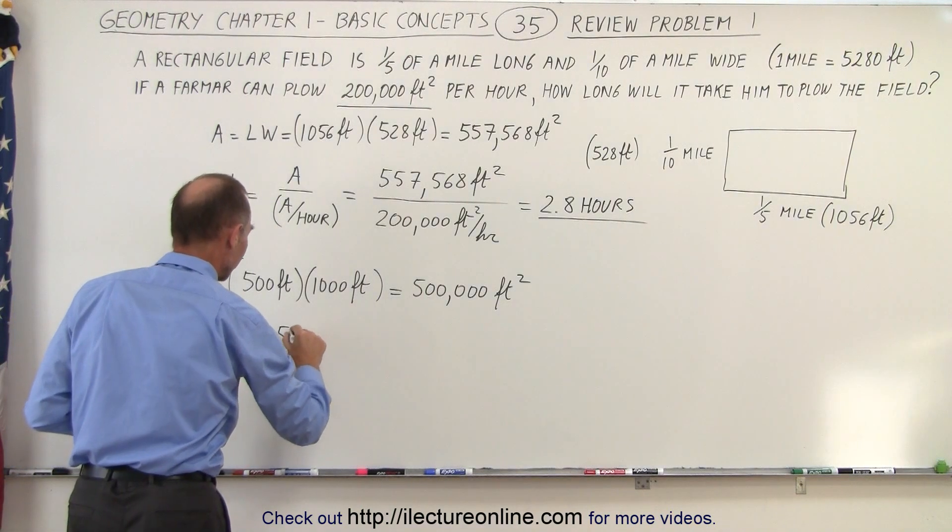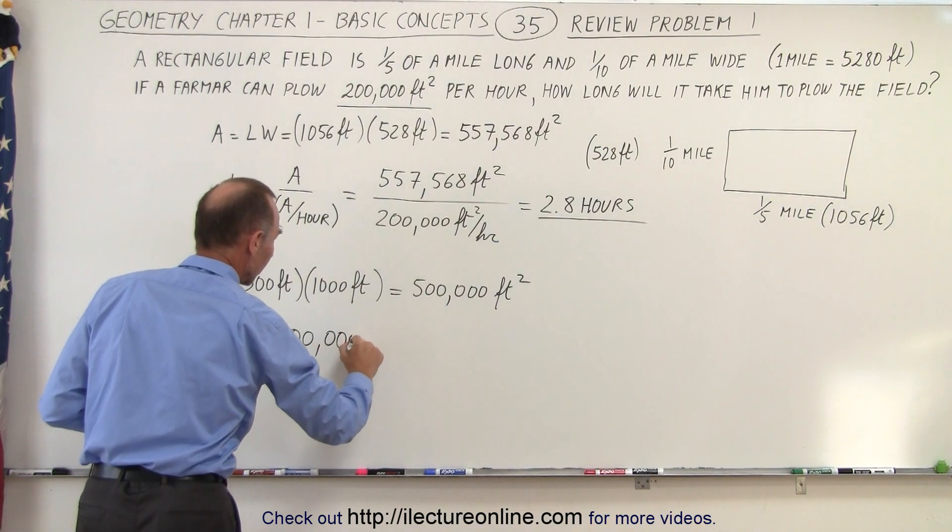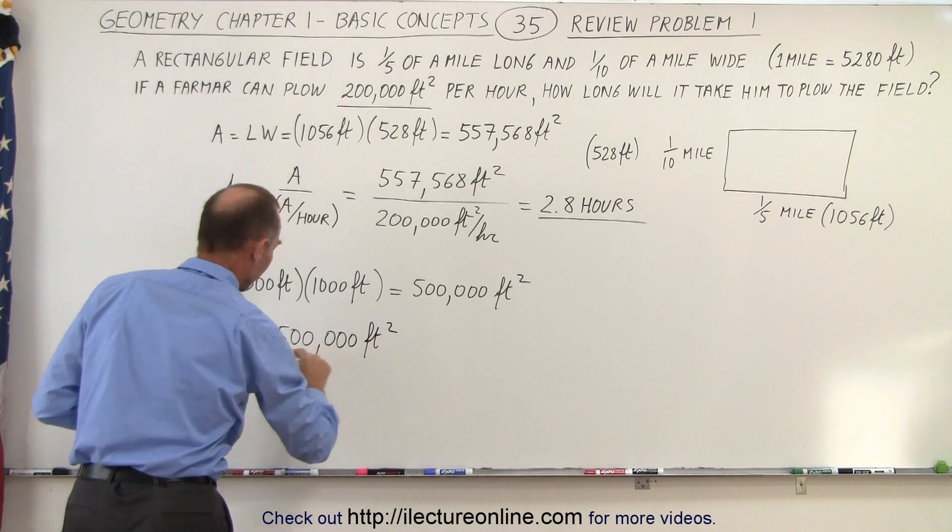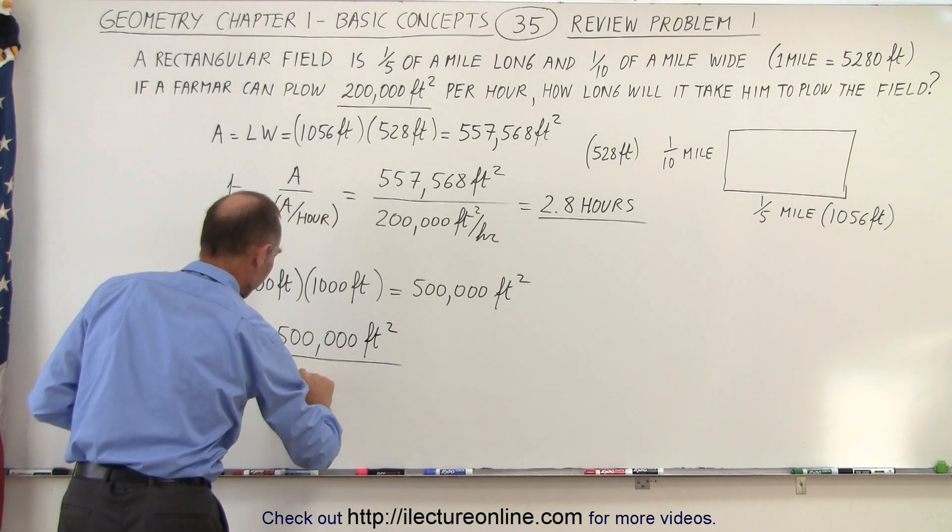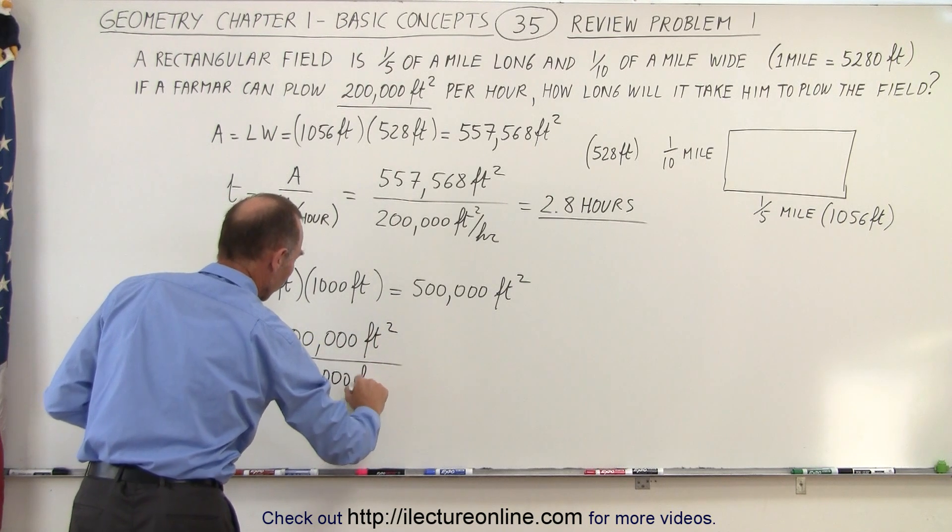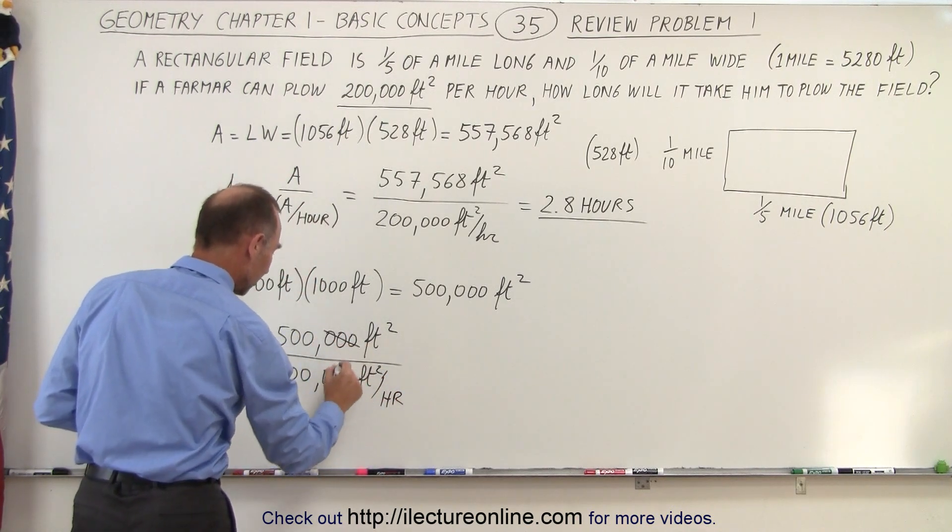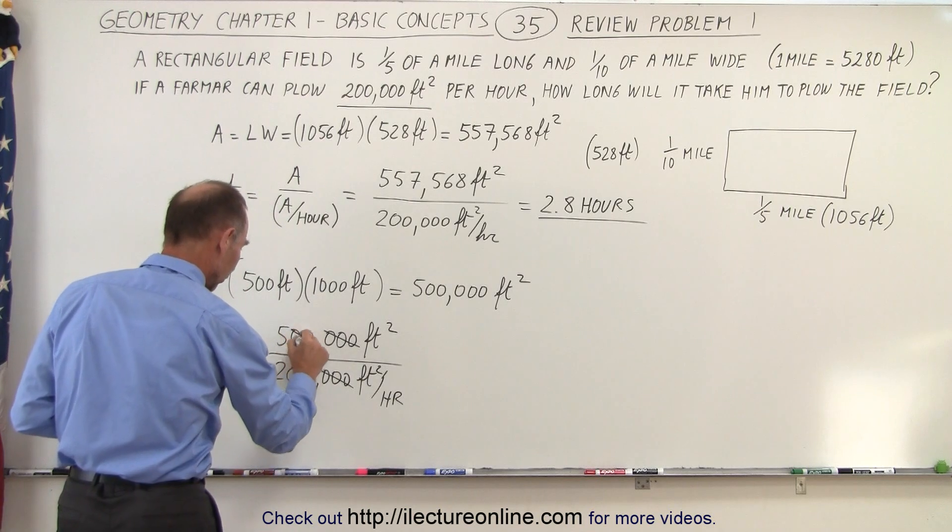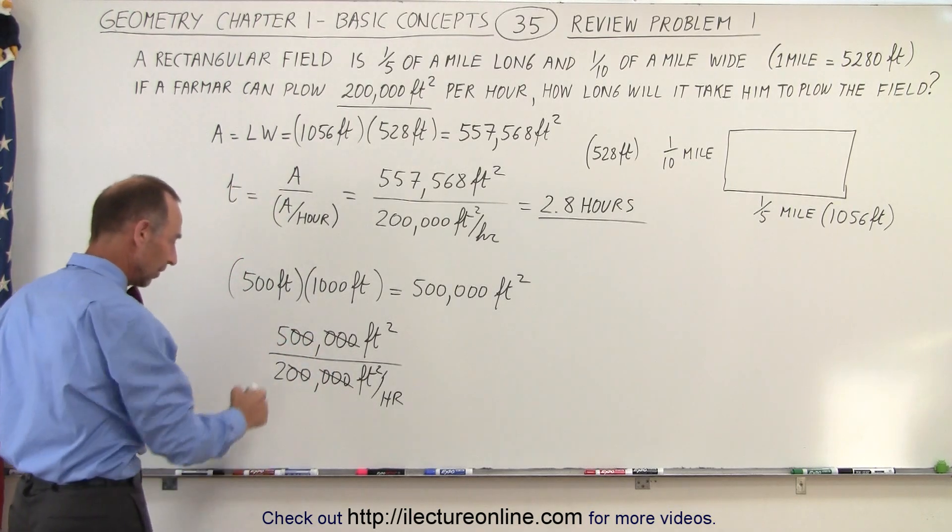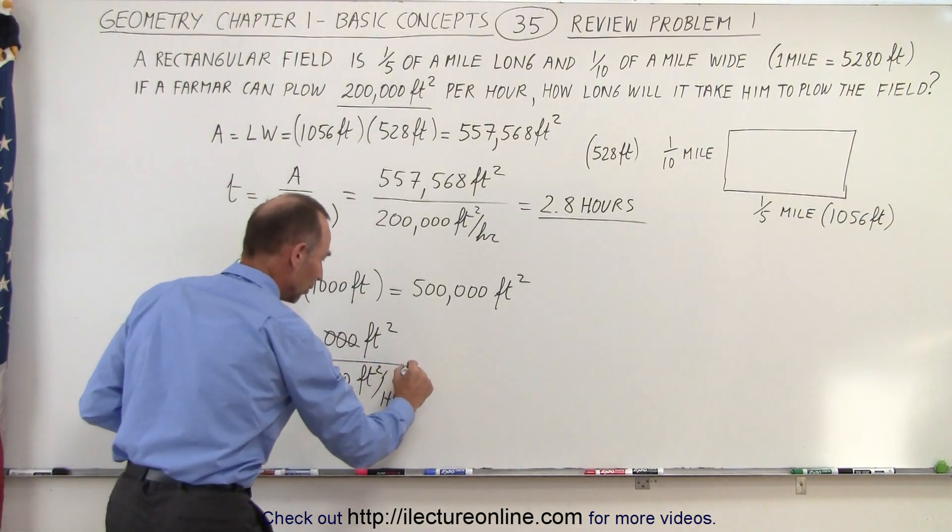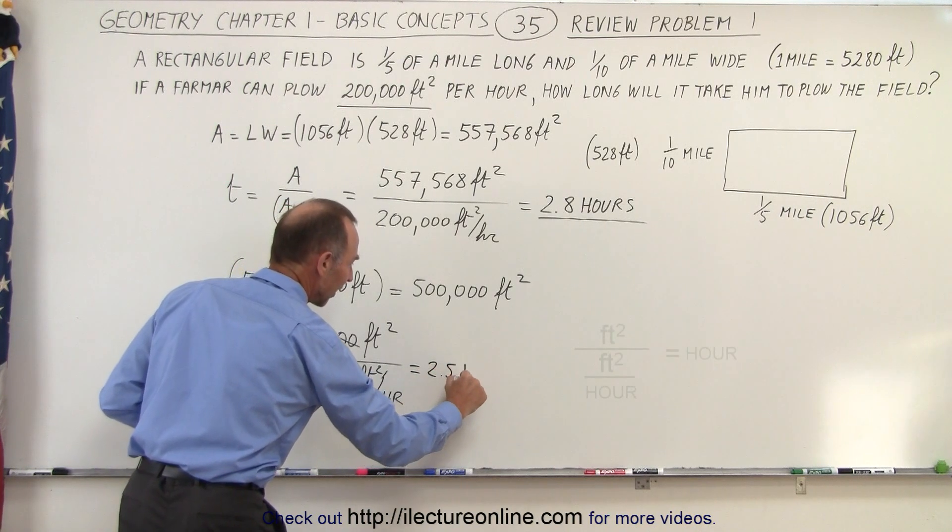So what we can do is we can take 500,000 square feet and divide it by 200,000 square feet per hour, like this. Notice that these three zeros cancel out those three zeros. Those two zeros cancel out those two zeros. We end up 5 divided by 2, which is equal to 2.5 hours.